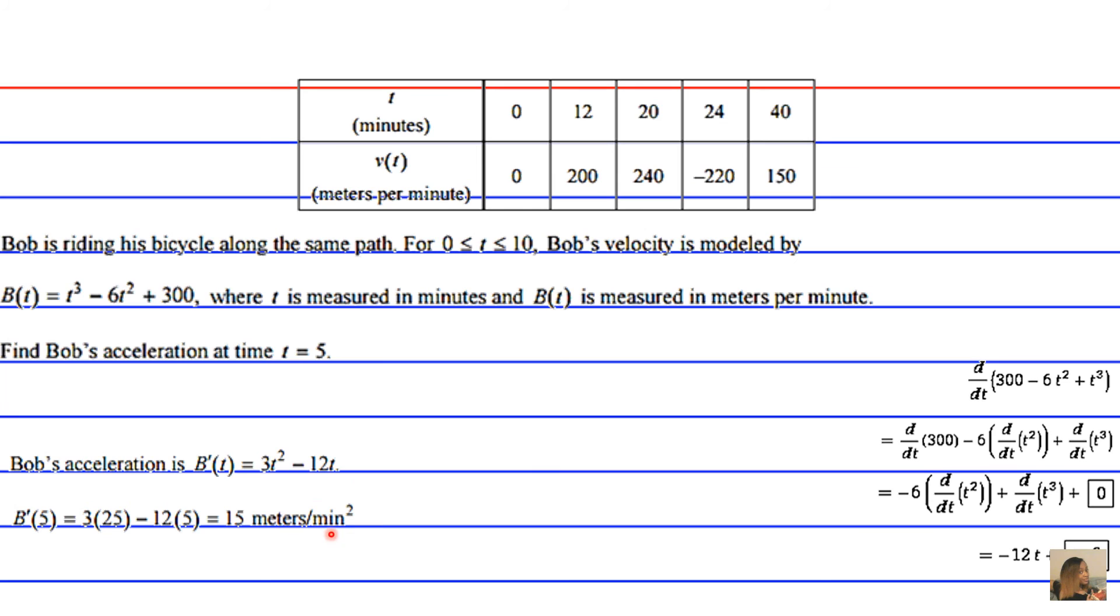Some people are not comfortable seeing a squared time dimension, but whenever you have a squared time dimension in a unit of travel in the numerator and the square time dimension is in the denominator, that's just basically an expression for some sort of acceleration.